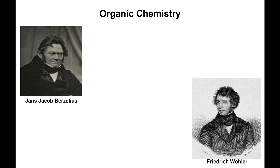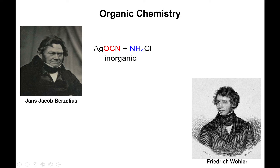But a student of his, Friedrich Wöhler, decided to mix a set of chemicals — specifically silver cyanate with ammonium chloride — in a typical double displacement reaction in which silver and ammonium displace each other, such that you form ammonium cyanate and silver chloride.